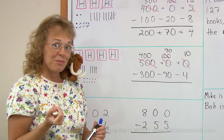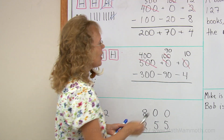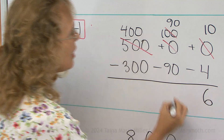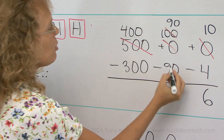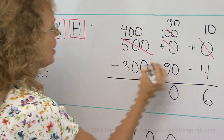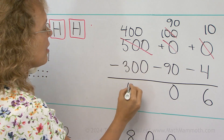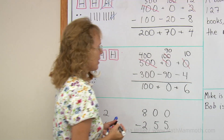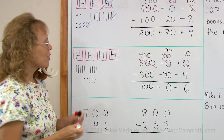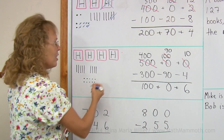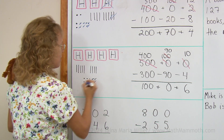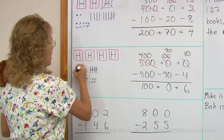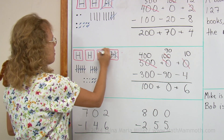Now, ready to subtract. Ten minus four would be six. Ninety minus ninety would be zero. And then four hundred minus three hundred is one hundred. And of course you can cross out those things in the picture too — four of those ones, all of these tens, and then three of these hundreds.